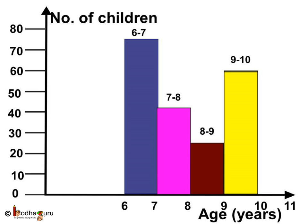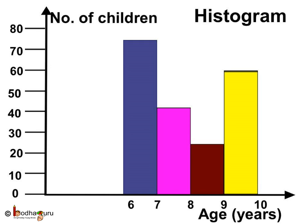They are continuous: 6 to 7, 7 to 8, 8 to 9, 9 to 10. So the width of the bar becomes the range of age here. This type of bar graph or bar chart is called a histogram.